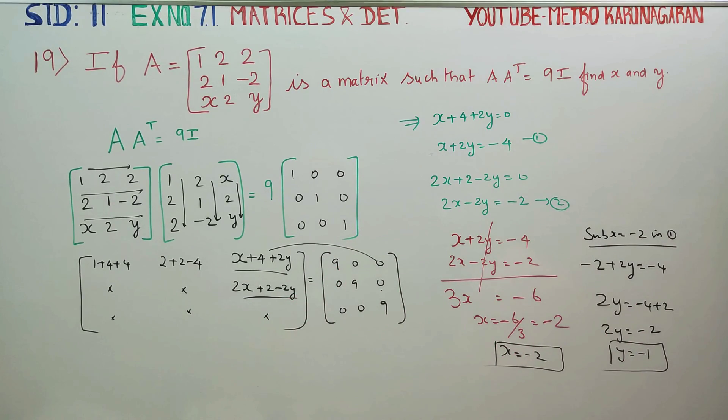Now, x is equal to minus 2 and y is equal to minus 1. If you have any terms, you can multiply and equate. If you have any questions, you will get your answers. That's why we can find x, y terms. Thank you.